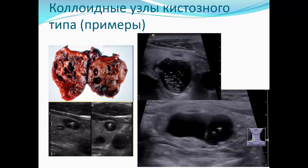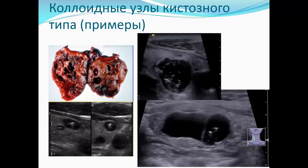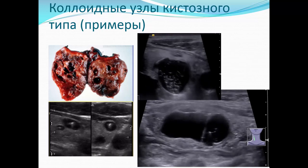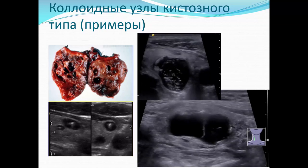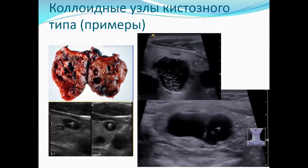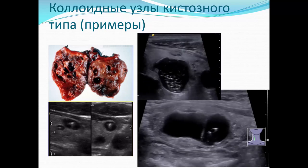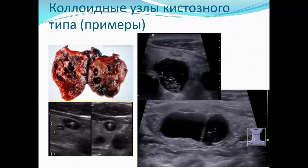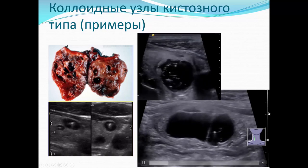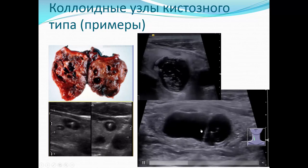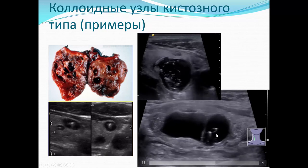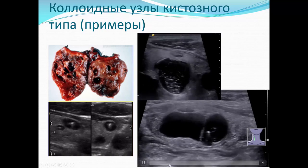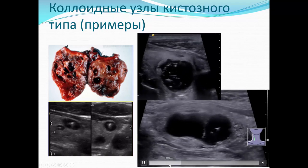Ещё один пример: узел, который трудно дифференцировать на единичной кинопетле, — результат слияния двух прилежащих кистозных полостей или кистозная полость, разделённая перегородкой. В одной части явные признаки феномена хвостов кометы, в другой — нет. Так или иначе, всё это относится к одному и тому же пятому морфотипу — ситуация спокойная.